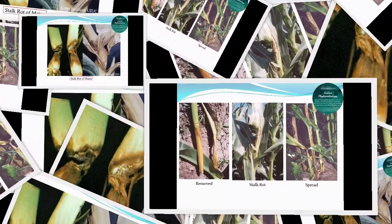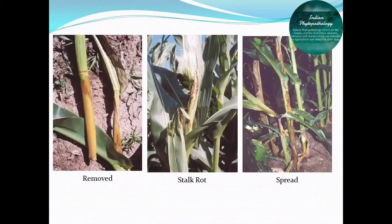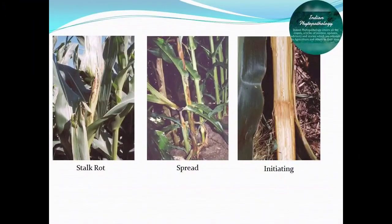Leaves sometimes show signs of wilting and affected plants topple down in a few days. Ears and shanks may also show rotting symptoms and may fail to develop further — the ears hang down simply from the plant. These are some particular marks of identification for bacterial stalk rot.